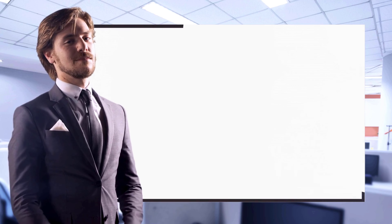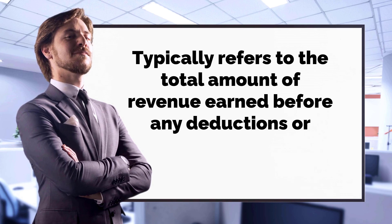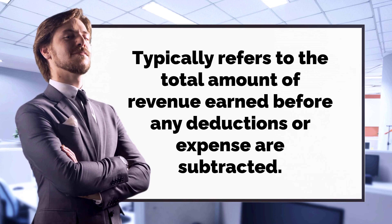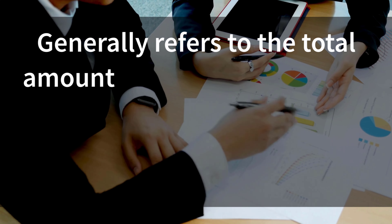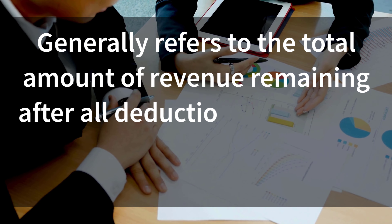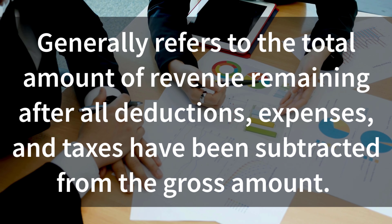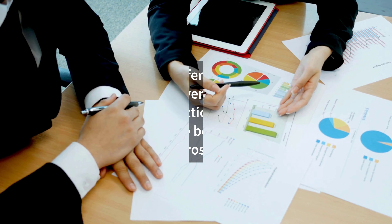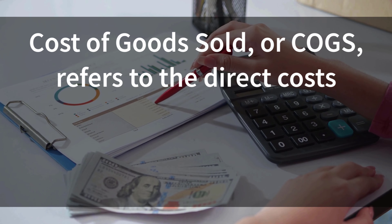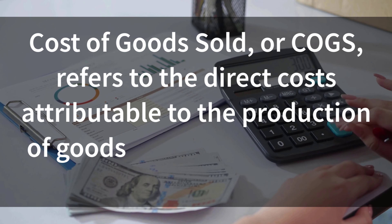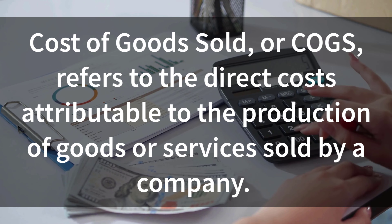Gross: Typically refers to the total amount of revenue earned before any deductions or expenses are subtracted. Net: Generally refers to the total amount of revenue remaining after all deductions, expenses, and taxes have been subtracted from the gross amount. COGS: Cost of goods sold, or COGS, refers to the direct cost attributable to the production of goods or services sold by a company.